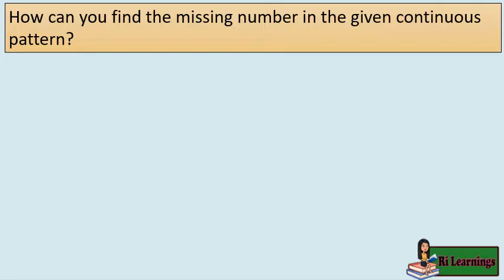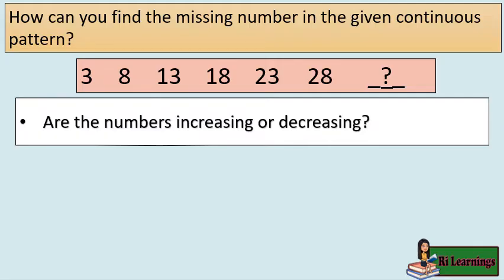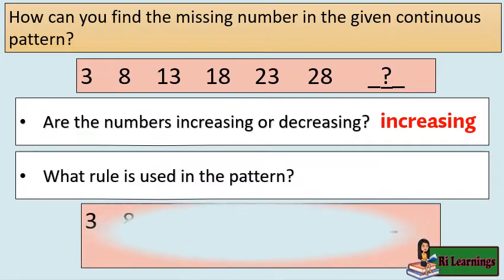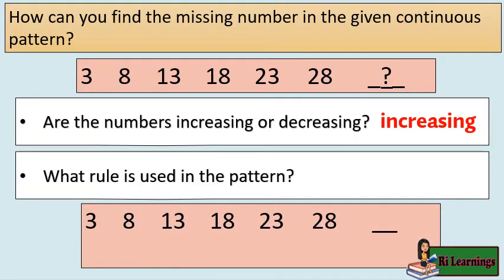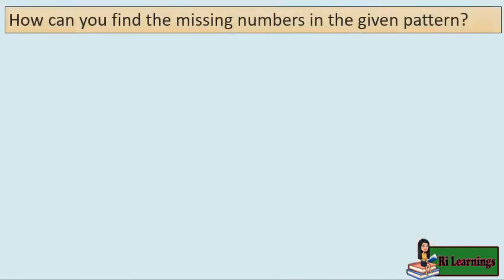Let us find the missing number in the given continuous pattern: 3, 8, 13, 18, 23, 28, blank. Are the numbers increasing or decreasing? The answer is increasing. Now let's find the relationship between the numbers by finding the common difference. The common difference between the two terms is increasing by 5. Perform the operation: 28 plus 5 equals 33. The missing term is 33.